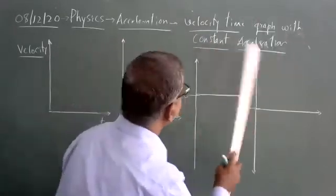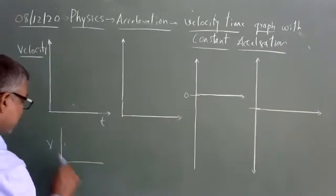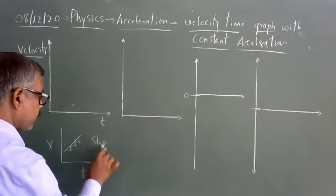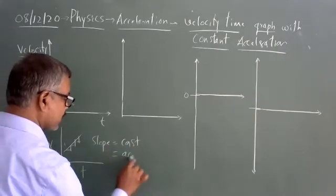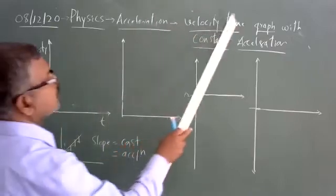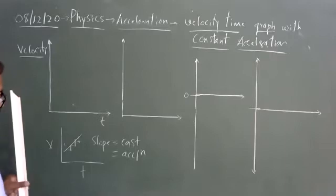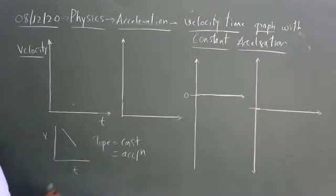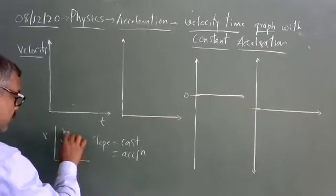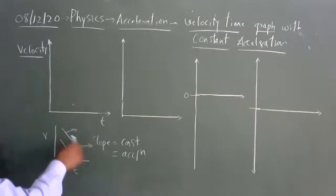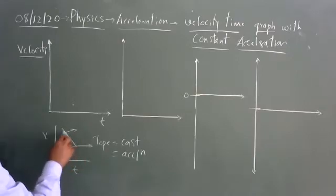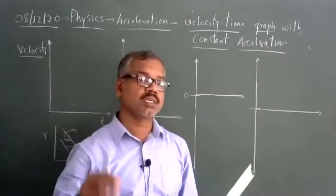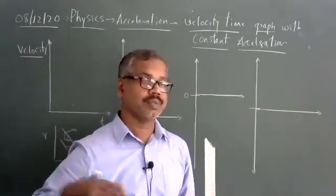Whenever you have a velocity-time graph with constant acceleration, take a slope here or take a slope there — slope is going to be constant. This constant slope is the acceleration. You can also have graphs that decrease; whether increasing or decreasing, the slope is constant. Such graphs are called velocity-time graphs with constant acceleration.